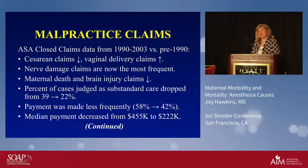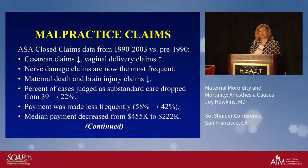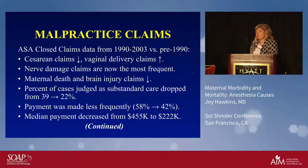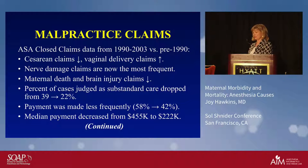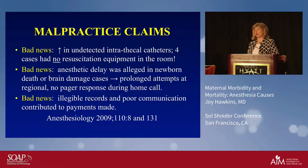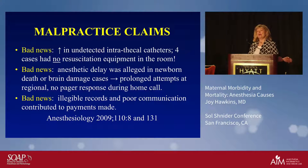The ASA Closed Claims Project's last full review of obstetric anesthesia claims in 2009 shows cesarean claims are down, but vaginal delivery claims are up — consistent with regional anesthesia becoming a more common source of liability. Nerve damage is currently the number one cause of liability. Maternal death and brain injury claims are down. The percent of cases judged as substandard care dropped, payment was made less frequently, and median payments decreased.